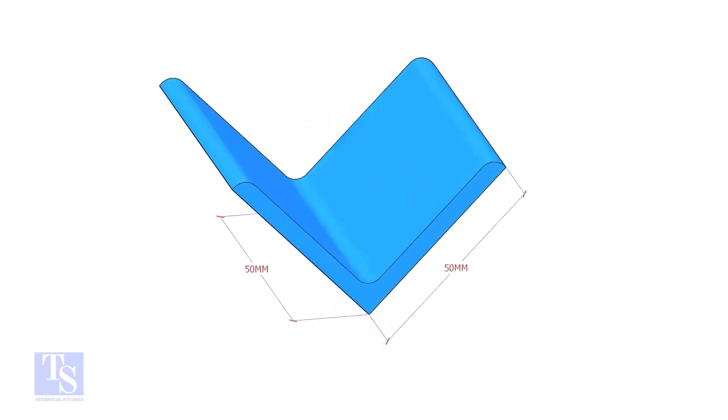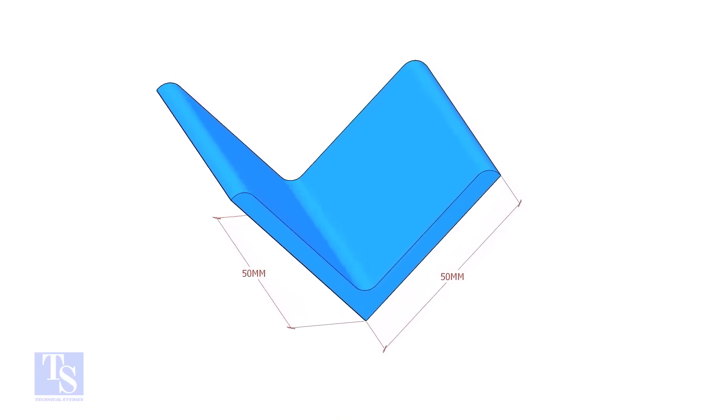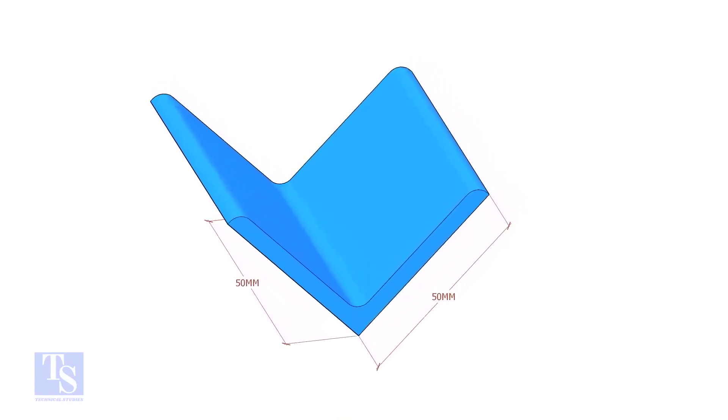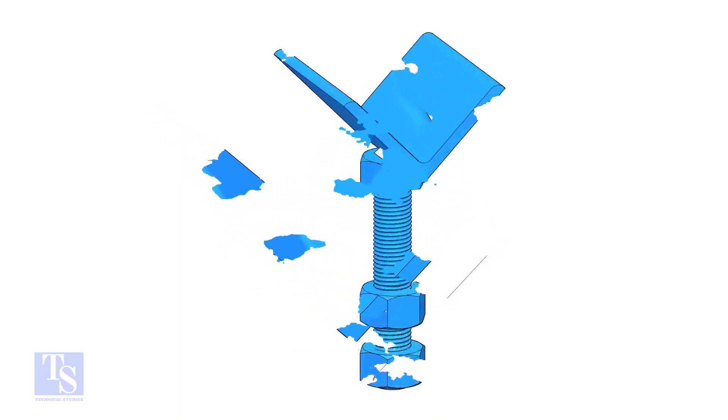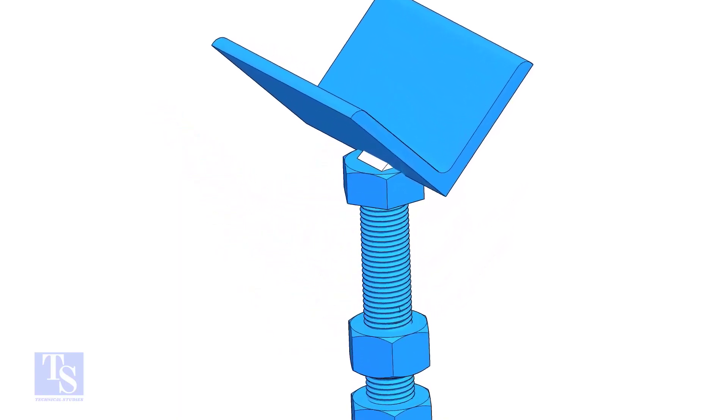A 50 by 50 angle bar, 50mm long. Tack weld the angle bar on the head of the bolt as shown.